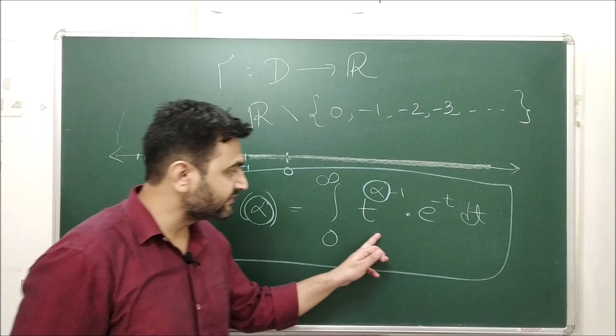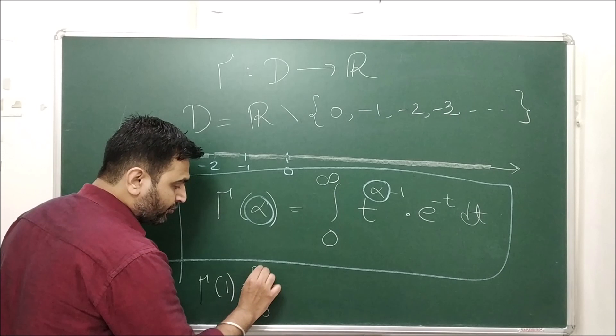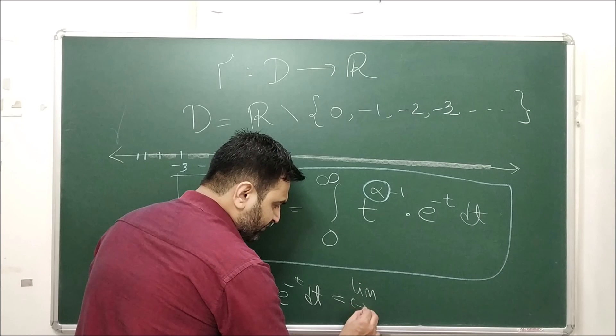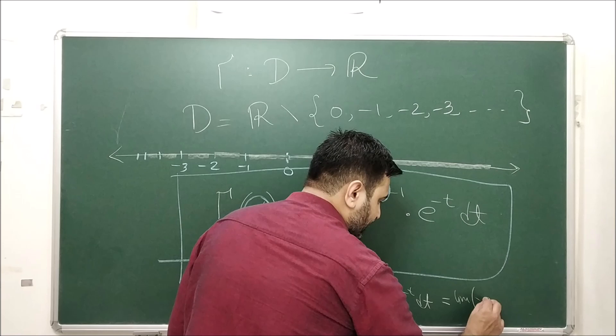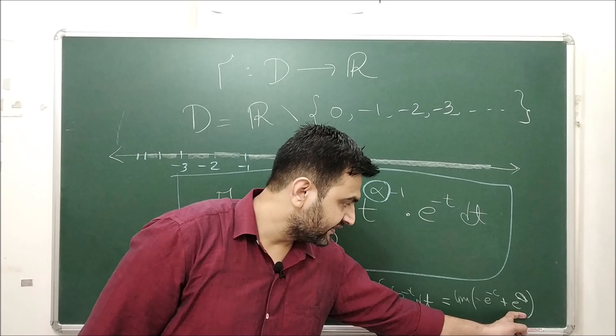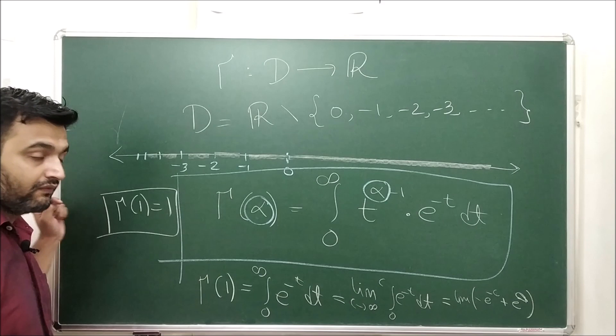When α is, say, minus one half, the integrand becomes t^(−3/2), so it also falls under the category of improper integral of type 2 because at 0 it is not defined. When α is greater than 1, it is only an improper integral of type 1. So it falls under both types depending on the value of α. Let's verify: Γ(1) = ∫₀^∞ t^(1−1) e^(−t) dt = ∫₀^∞ e^(−t) dt. Taking the limit as c → ∞, this evaluates to 1. So Γ(1) = 1.